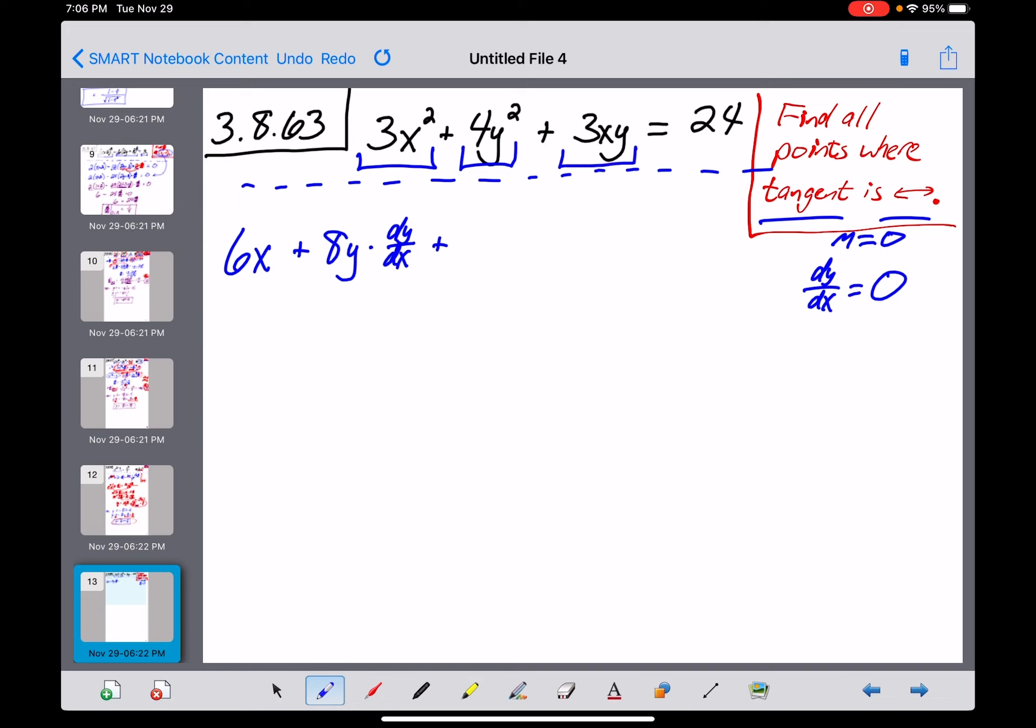Where this one gets tough is right here. Taking the derivative of 3xy is going to require the product rule, and I'd probably put the 3x together as the first factor and the y as the second. So first factor, that's just going to be 3x multiplied by the derivative of the second, dy dx, plus the second factor, which is y times the derivative of the first, the derivative of 3x is just going to be 3, equals the derivative of 24, or any constant for that matter, is going to be 0.